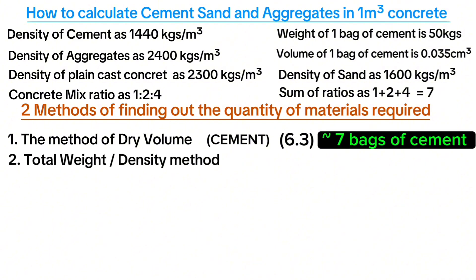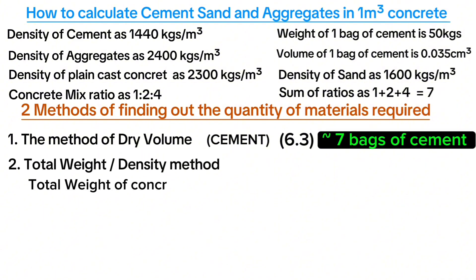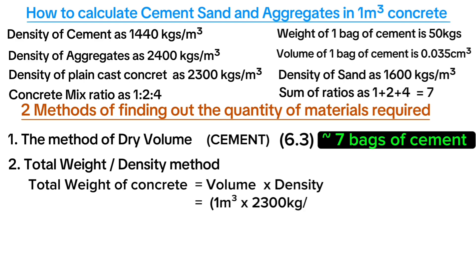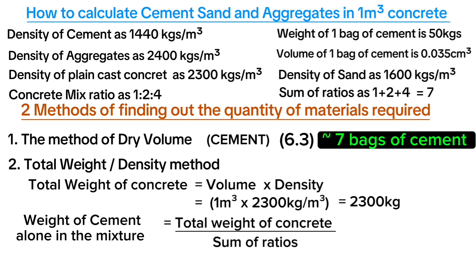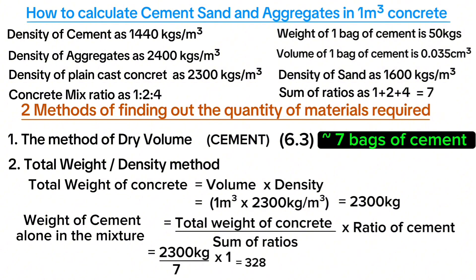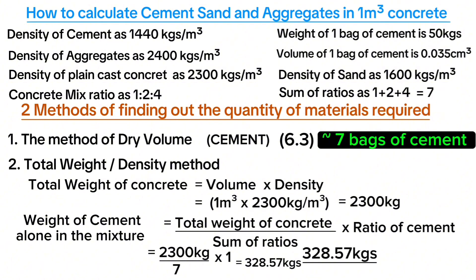Using the total weight or density method, total weight of concrete equals volume multiplied by density: 1 m³ × 2,300 kg/m³ = 2,300 kilograms. Weight of cement alone equals total weight divided by sum of ratios, multiplied by the cement ratio: 2,300 ÷ 7 × 1 = 328.57 kilograms. Since one bag of cement equals 50 kilograms, the number of bags is 328.57 ÷ 50 = 6.6 bags, equivalent to 7 bags of cement.